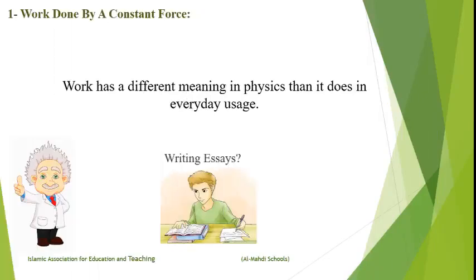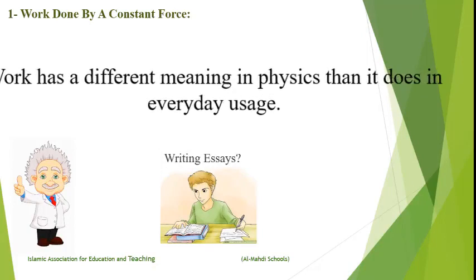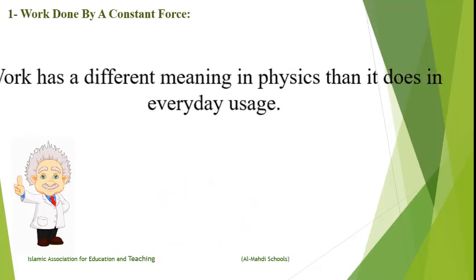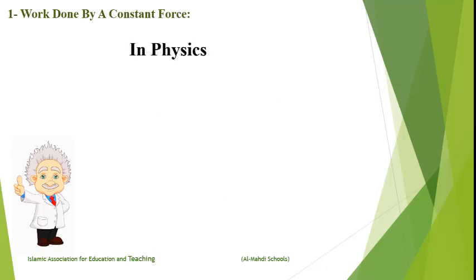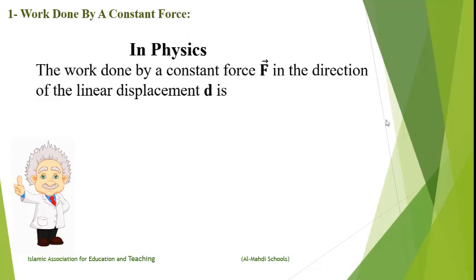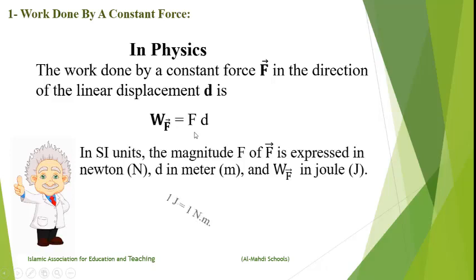Work has a different meaning in physics than it does in everyday usage. Writing essays, according to physics, is not work. In physics, the work done by a constant force in the direction of the displacement D is given as: W = F · D, where F is the force in newtons, D is the displacement in meters, and thus 1 newton-meter equals 1 joule.